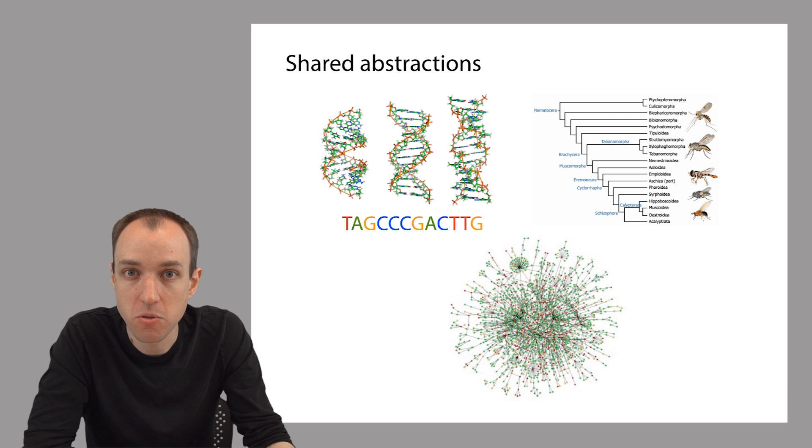For example, one abstraction that we've talked about at length in this course is strings. DNA and RNA and protein, we didn't really talk about RNA and protein in this class, but they can all be abstracted as strings, finite sequences of symbols. And if we can make our problem into a string problem, then we're in an area that computer scientists have studied for decades.